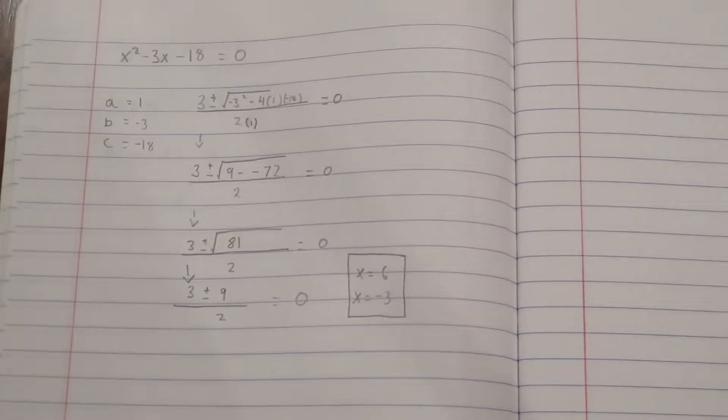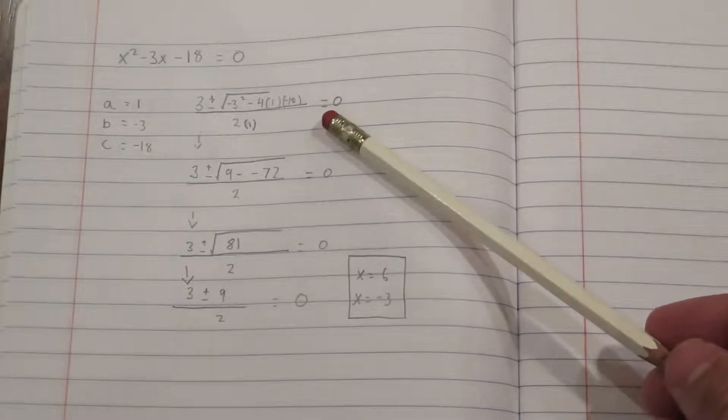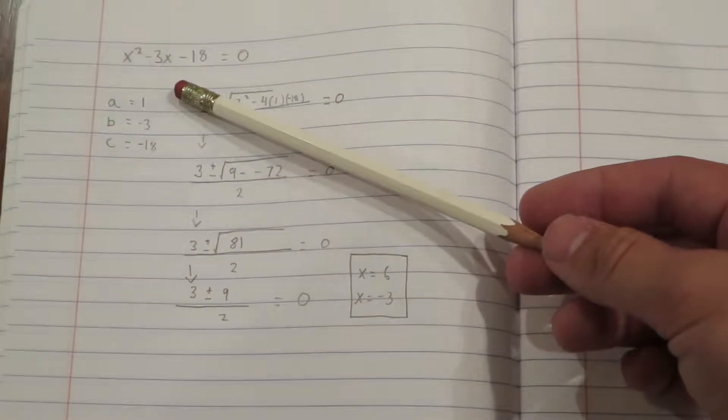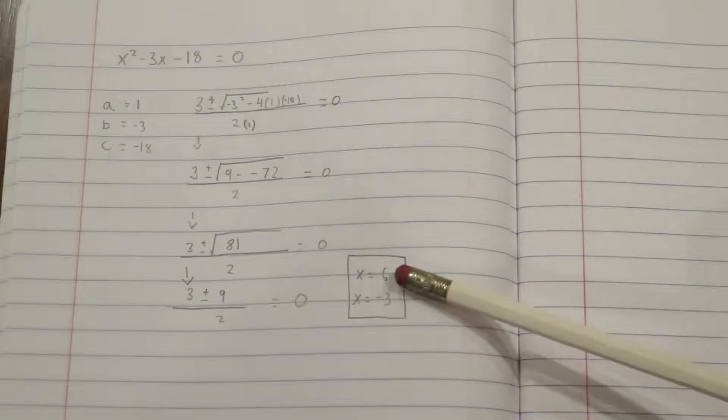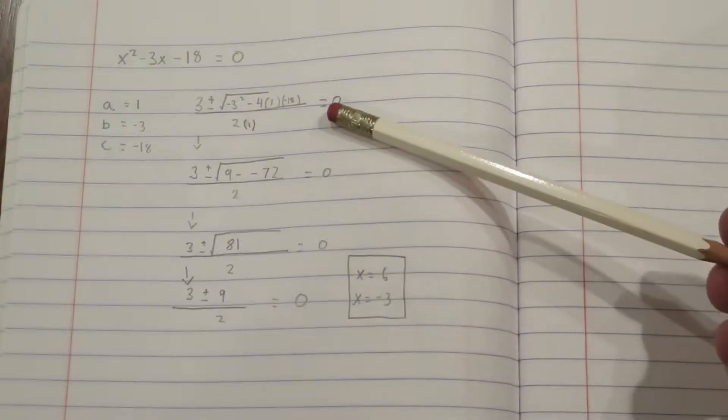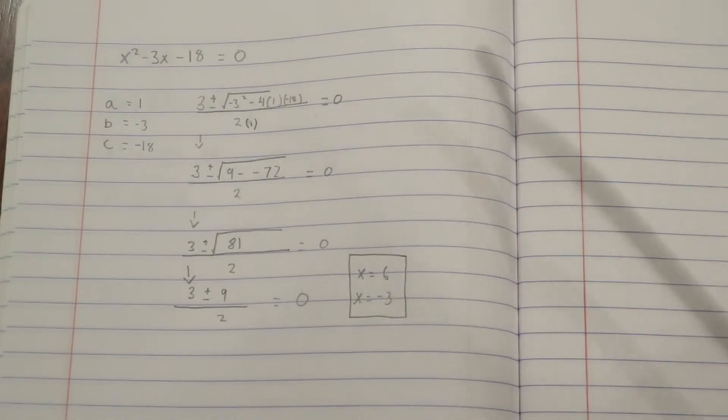To test if we were right, we can use the quadratic formula or factor because this problem is factorable, and we get 6 and negative 3. I wrote that out here to show you that this formula does work.